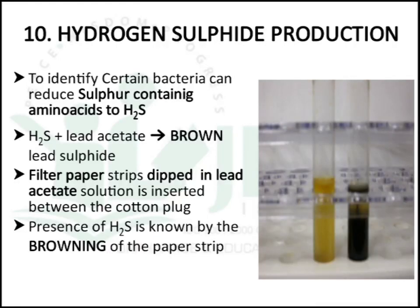The next test is the hydrogen sulfide production test, used to identify bacteria that reduce sulfur-containing amino acids to H2S. Lead acetate is added so that hydrogen sulfide reacts with lead acetate to produce brown-colored lead sulfate. Filter paper strips dipped in lead acetate solution are inserted between the cotton plug, and the presence of H2S is indicated by browning of the paper strip.